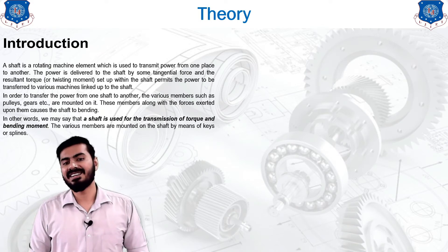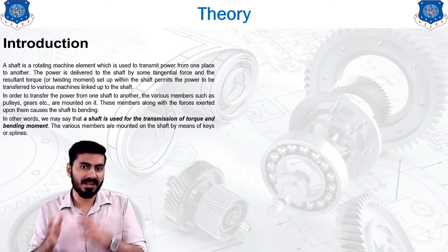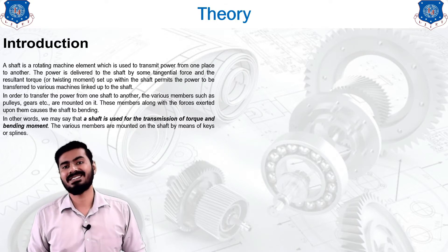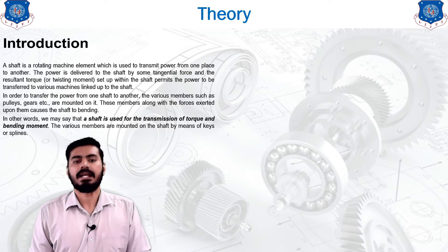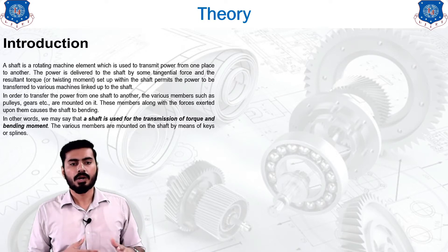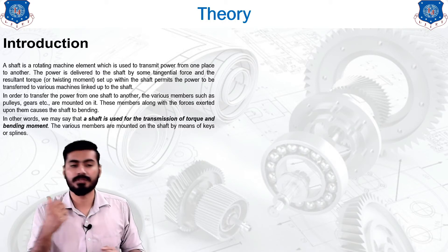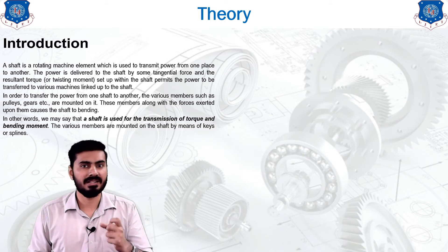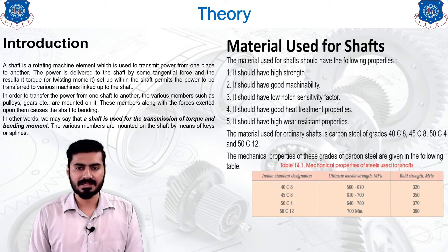To transmit power from one shaft to another, various members such as pulleys, gears, couplings, and other components are mounted on the shaft. These members, along with the forces exerted upon them, cause the shaft to bend, and the shaft may fail due to bending. In other words, the shaft is used for the transmission of torque and bending moment. Various members are mounted on the shaft by means of keys and splines.